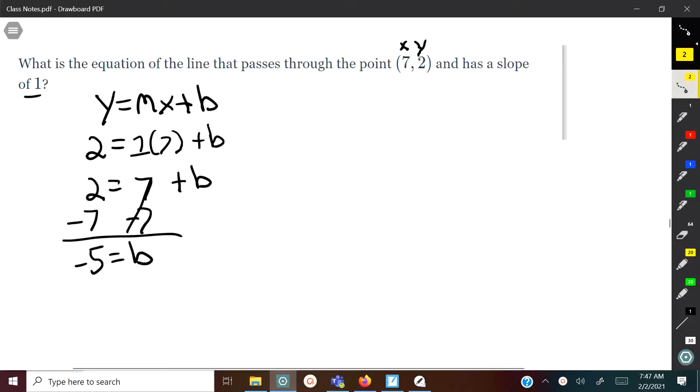Then we subtract 7 on both sides to get b by itself. So now we know that b is negative 5. We'll rewrite the equation: y equals mx plus b, with m being 1. So it's 1x minus 5. We found the slope, which was given, and the y-intercept, which is negative 5.